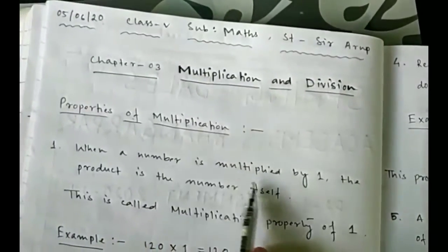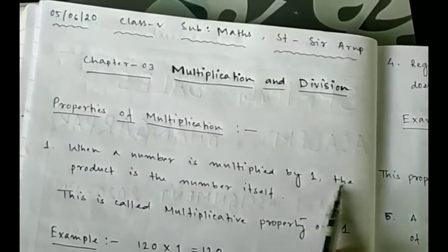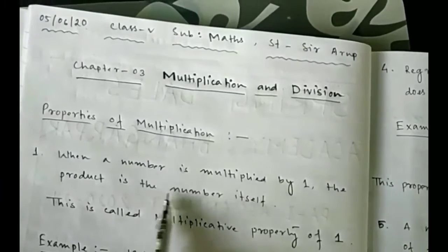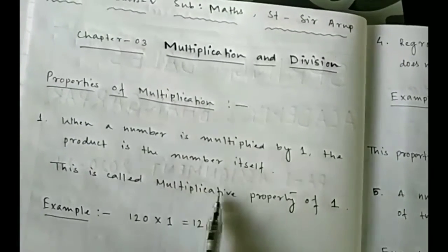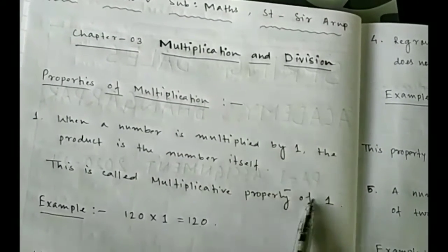When a number is multiplied by one, the product is the number itself. This is called the multiplicative property of 1. For example, 120 into 1 is equal to 120 itself.